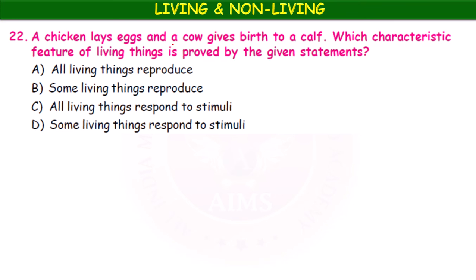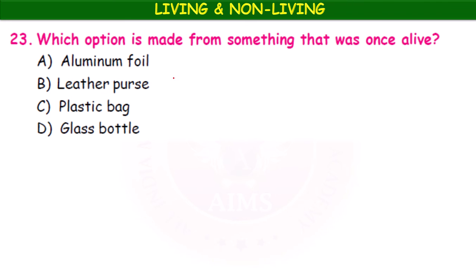A chicken lays eggs and a cow gives birth to a calf. Which characteristic feature of living things is proved by these statements — all living things reproduce, some living things reproduce, or all living things respond to stimuli? The answer is: all living things reproduce. Which option is made from something that was once alive — aluminum foil, leather purse, plastic bag, or glass bottle? A leather purse is made from something that was once alive.